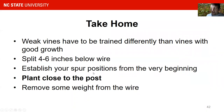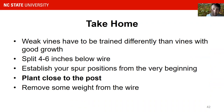Our take-home messages here are: weak vines have to be trained differently than vines with good growth. You should split four to six inches below the wire, establish your spur positions from the very beginning, and plant close to the post about three to four foot. Remove some weight from the wire by putting your cordon onto the post when you train your vine. With that, I hope there will be some questions, and in our next video we will talk about muscadine pruning.